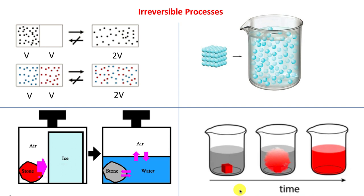Of course all physical processes are actually irreversible, but it is useful to think of reversible processes. They are idealizations, very much like the idealization of a free particle — in nature there is no such thing, but it is very helpful to think of one. In fact, you cannot even begin doing classical mechanics without that concept. In thermodynamics, reversible processes are important for the same reason.